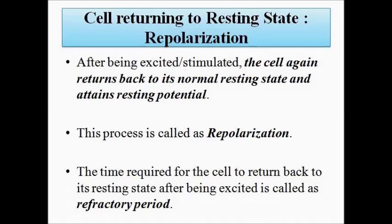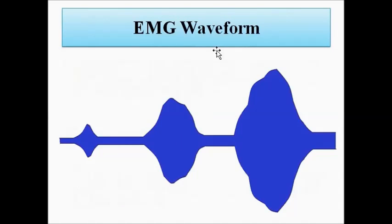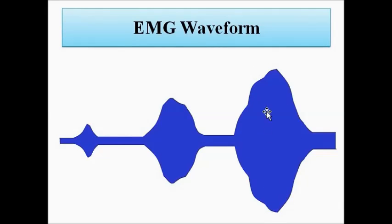The EMG waveform looks like this: the amplitude gradually increases in both the positive and negative directions, and then gradually decreases. This is the EMG waveform.